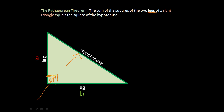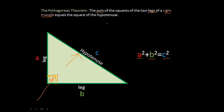Now that we know what the legs and hypotenuse are, here's the Pythagorean theorem. If we label the legs a and b and the hypotenuse c, then Pythagoras figured out that a squared plus b squared equals c squared. In other words, the sum of the squares of the two legs equals the square of the hypotenuse. Write this down and memorize it — commit it to memory.